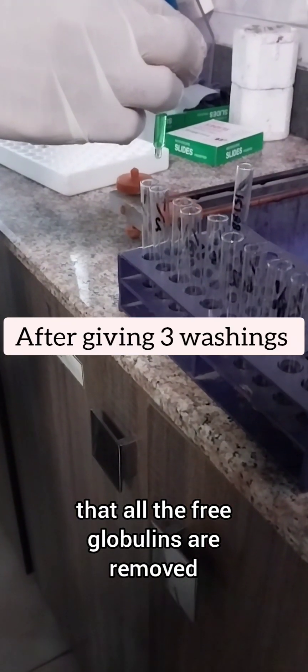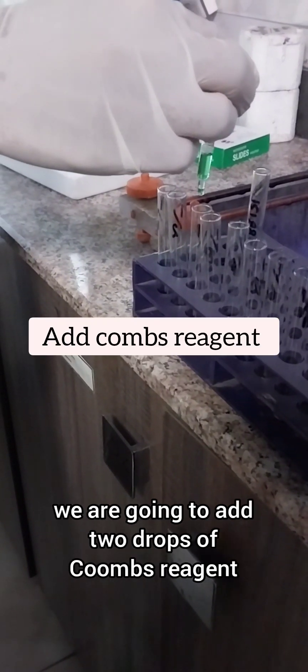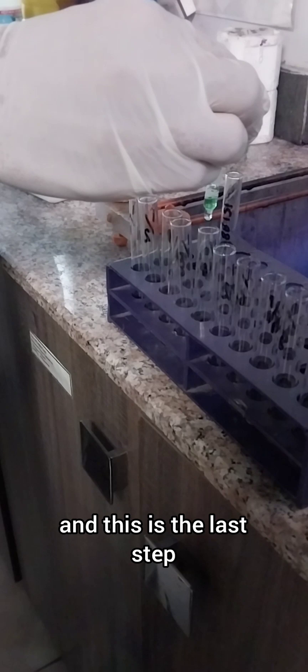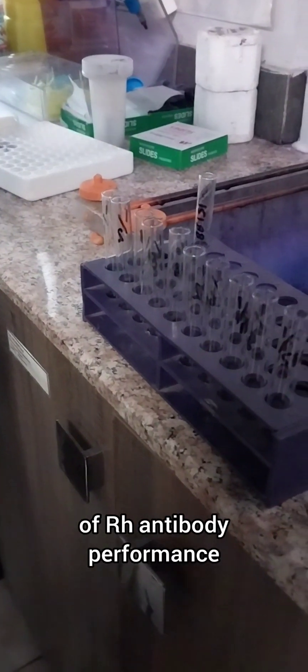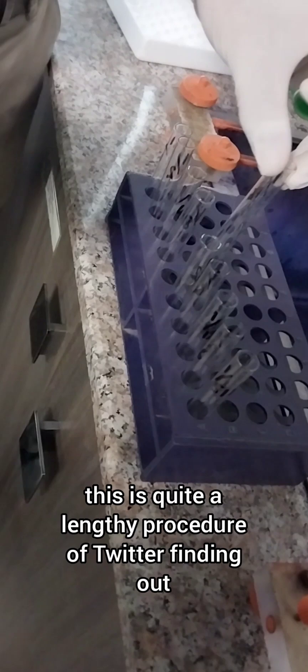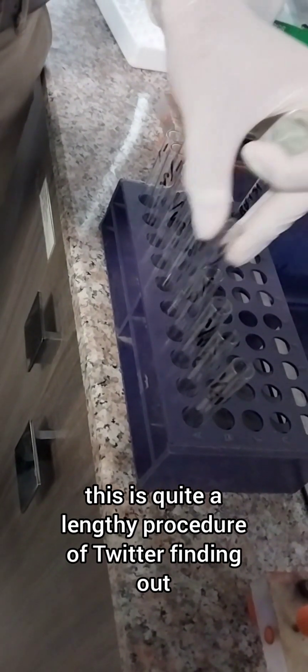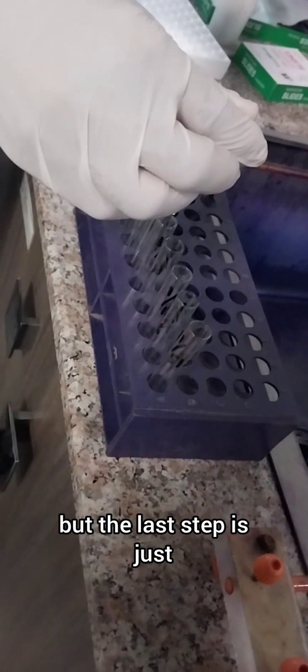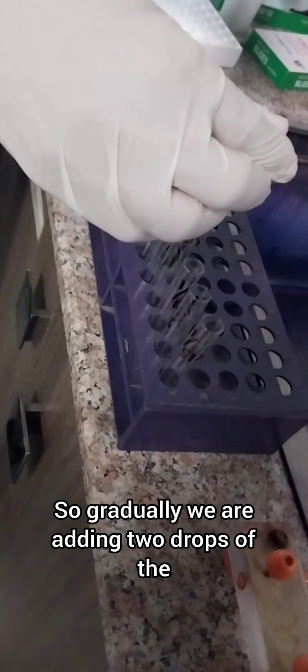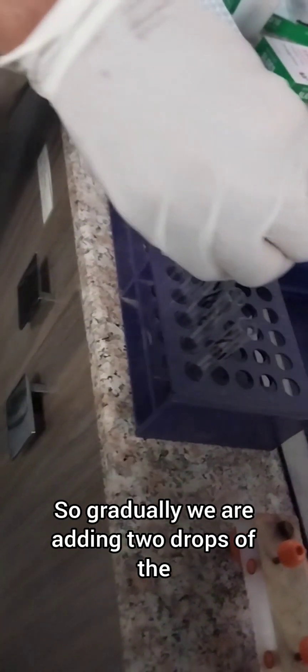So after three washings, to each test tube we are going to add two drops of Coombs reagent, and this is the last step of RH antibody performance. This is quite a lengthy procedure, but the last step is just the Coombs test. Gradually we are adding two drops of the Coombs reagent to each test tube.